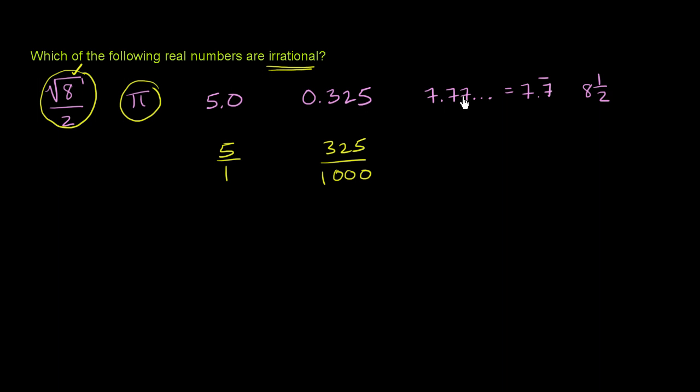Here I have 7.7777777 and it just keeps going on and on and on forever. And the way we denote that, you could just say these dots that say that the 7's keep going, or you could say 7.7 and this line shows that the 7 part, the second 7, just keeps repeating on forever.